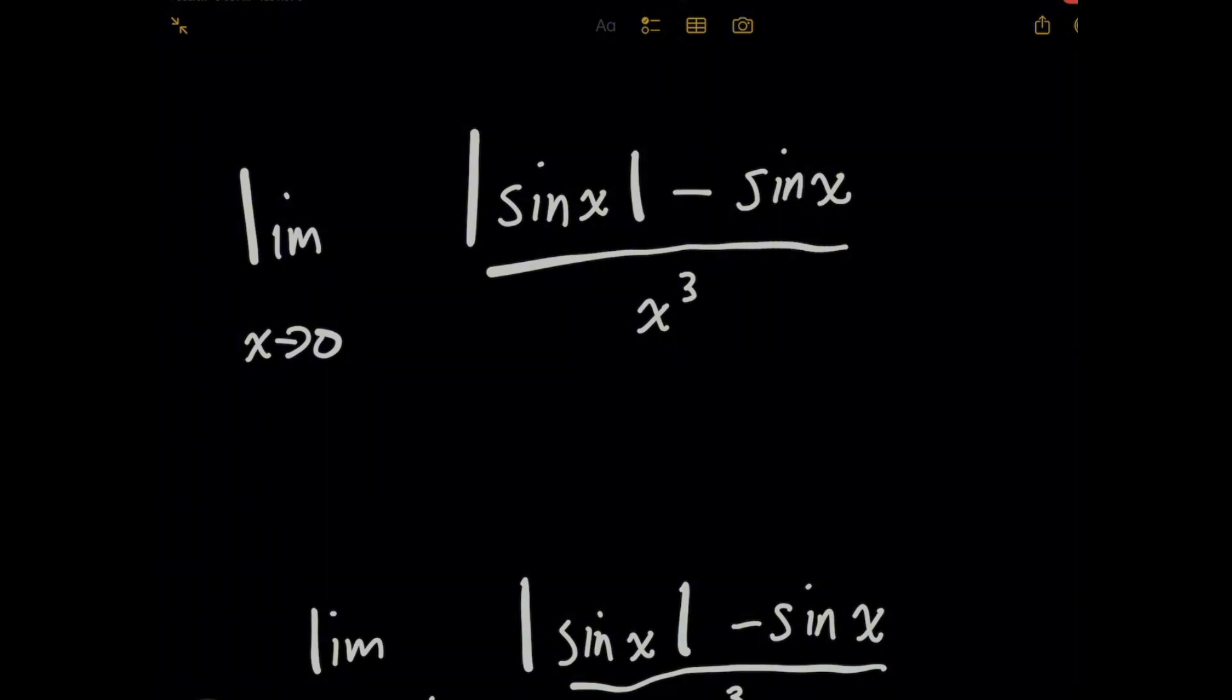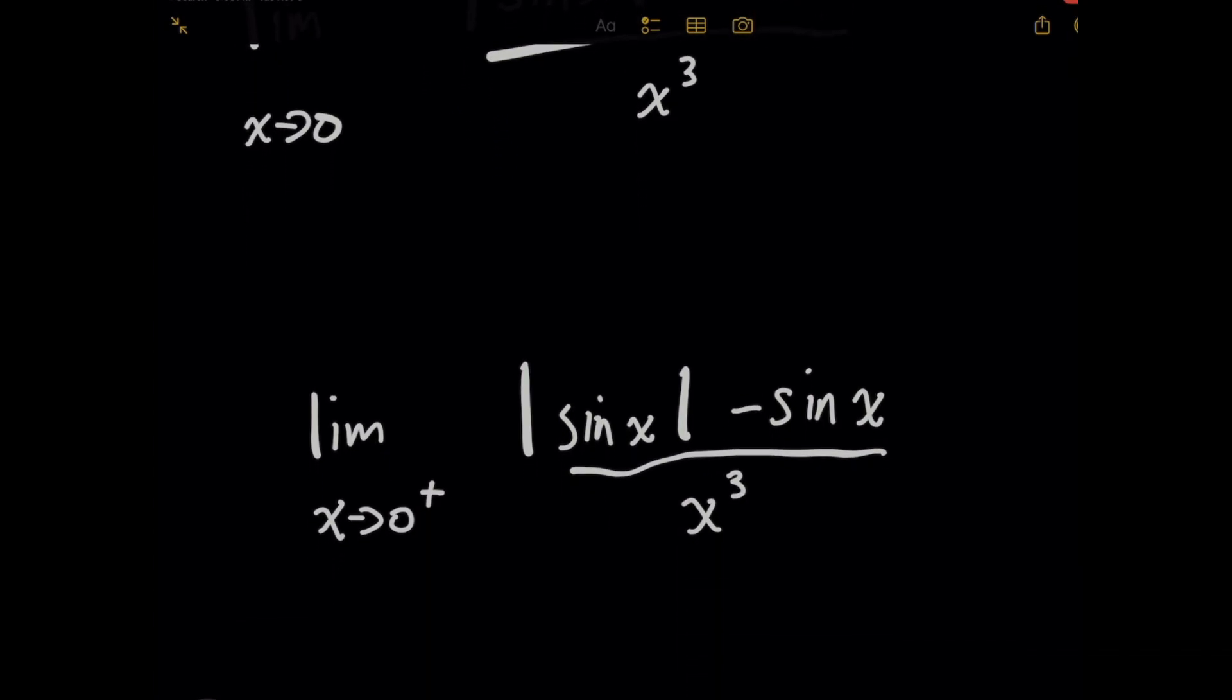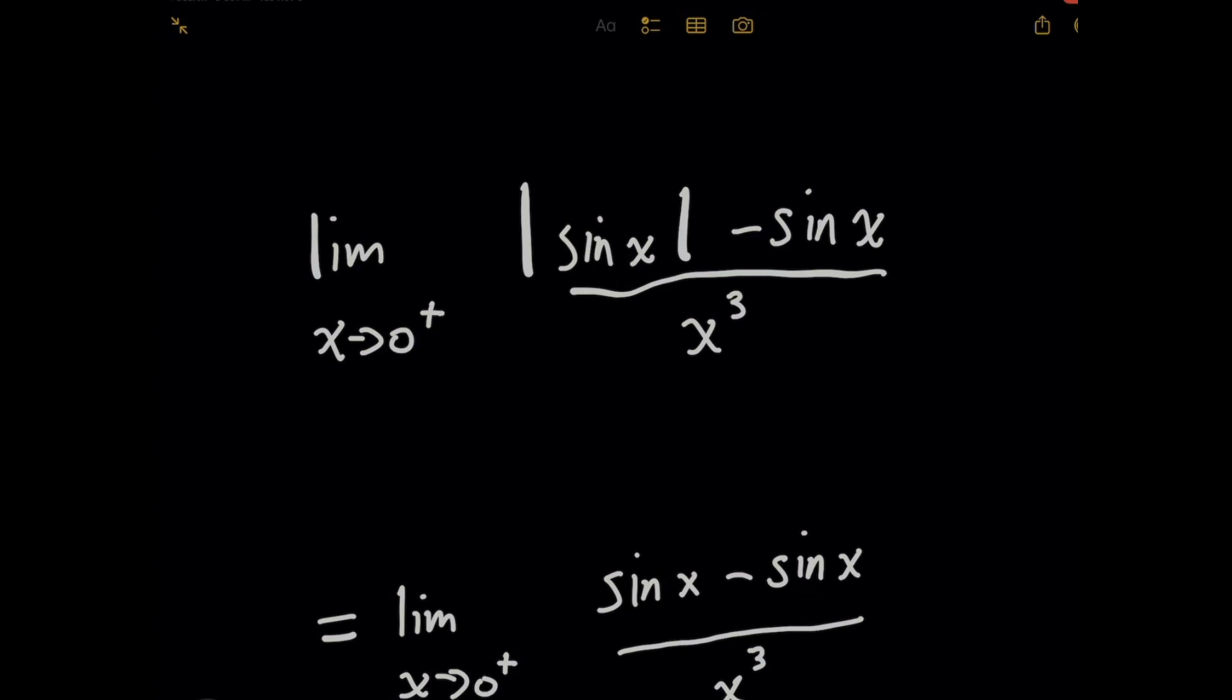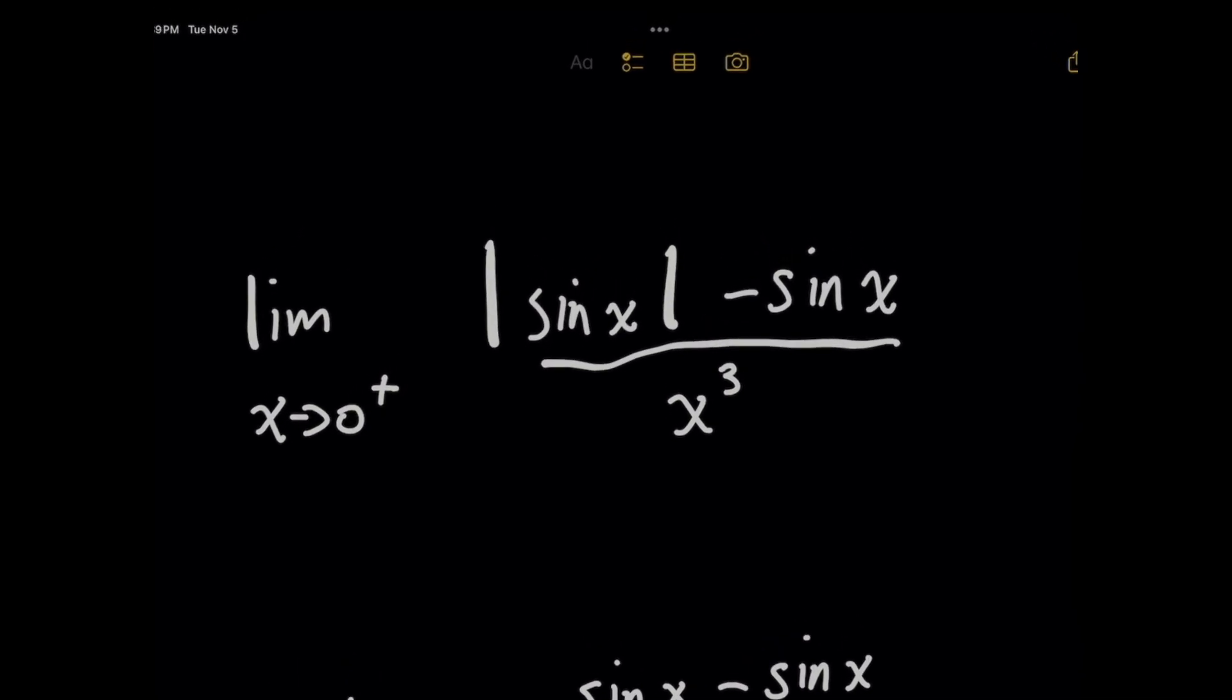For this problem, we can break this limit up into two parts because we're dealing with an absolute value function. For the first part, I want to approach x equals zero from just the right of zero. So I'm going to use a zero plus notation here, meaning we're only going to care about values of x that are positive but very small, like 0.0005.